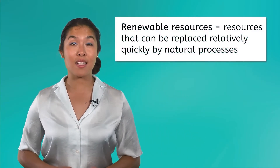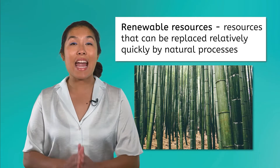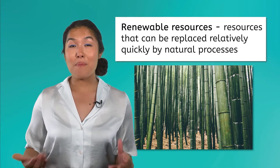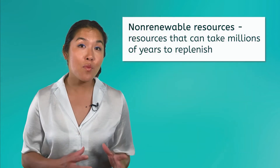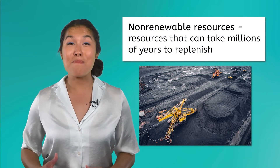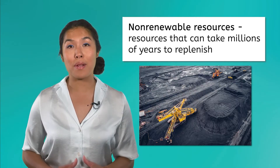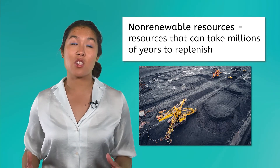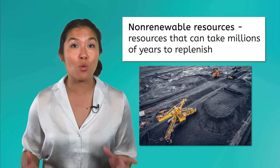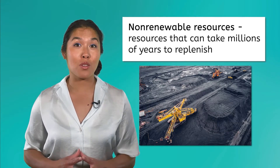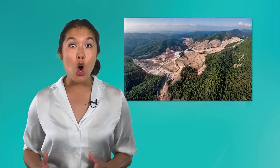Let's start with resource depletion. When discussing resources, they are usually broken into two types: renewable and non-renewable. Renewable resources, like bamboo trees, are resources that can be replaced relatively quickly by natural processes. While non-renewable resources, like coal, could take millions of years to be replenished. When large amounts of these resources are used up, it is considered resource depletion. Some examples of resource depletion include deforestation, overfishing, and the overmining of copper.